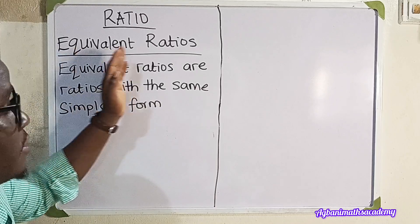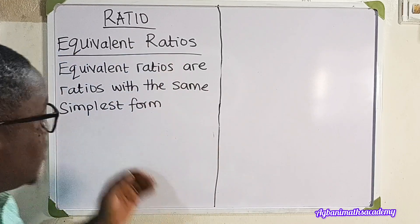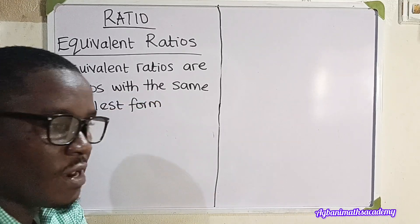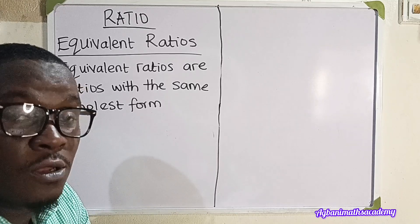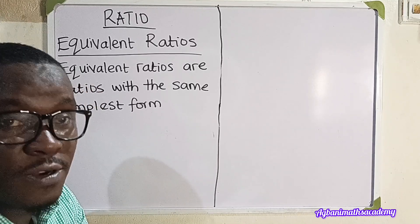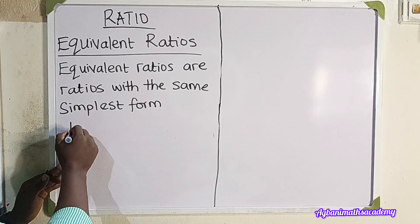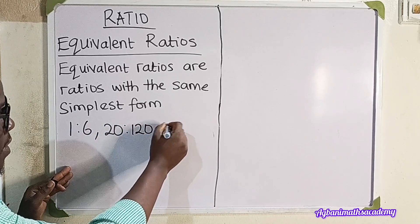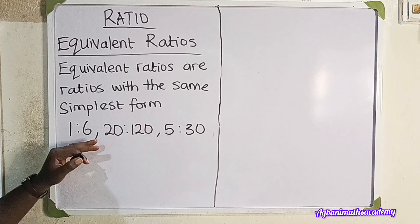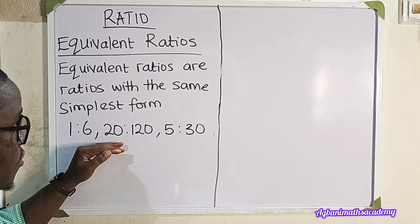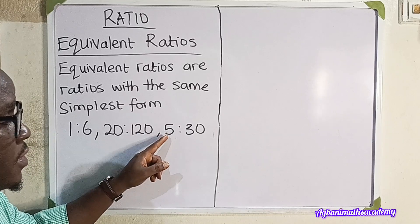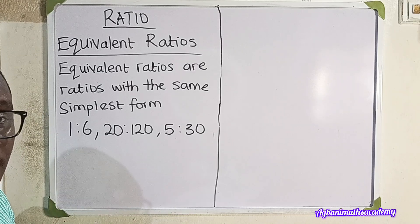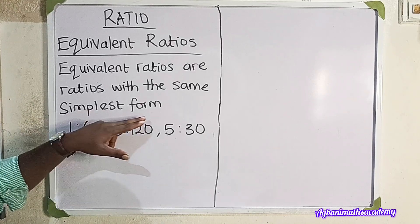The first thing we are looking at is equivalent ratios. What are equivalent ratios? Equivalent ratios are ratios with the same simplest form. Whenever you have two or more ratios that have the same simplest form, those ratios are called equivalent ratios. For example, we have 1 is to 6, 20 is to 120, and 5 is to 30. All these are equivalent ratios — but how do we know that? Remember, they must have the same simplest form.